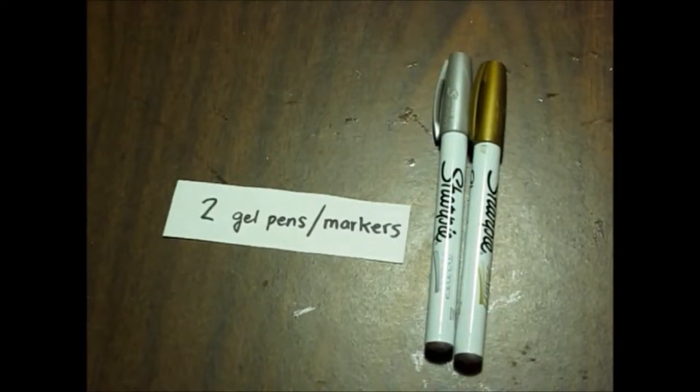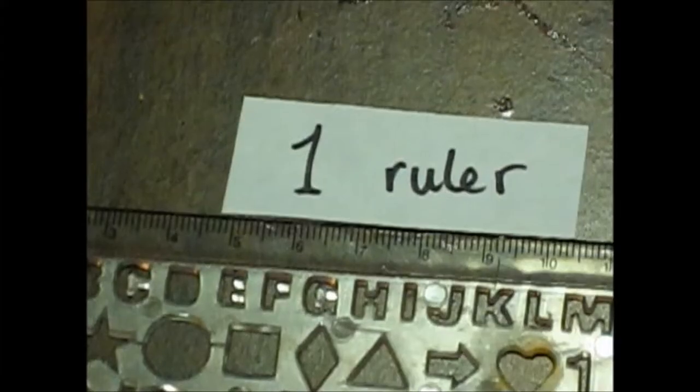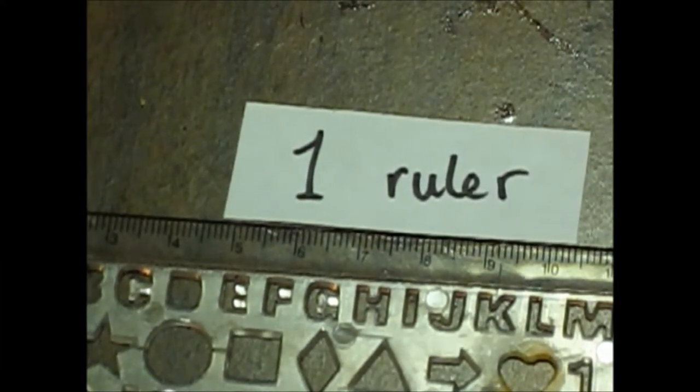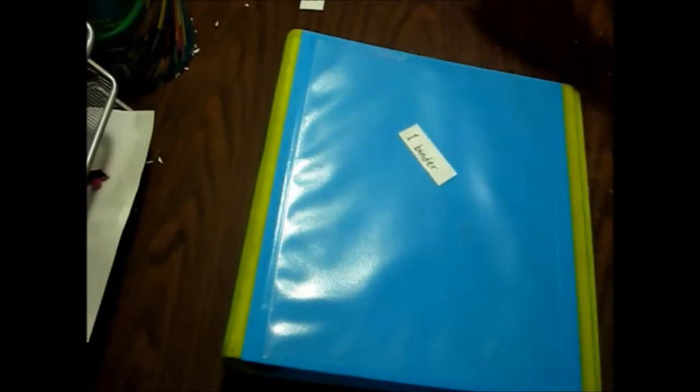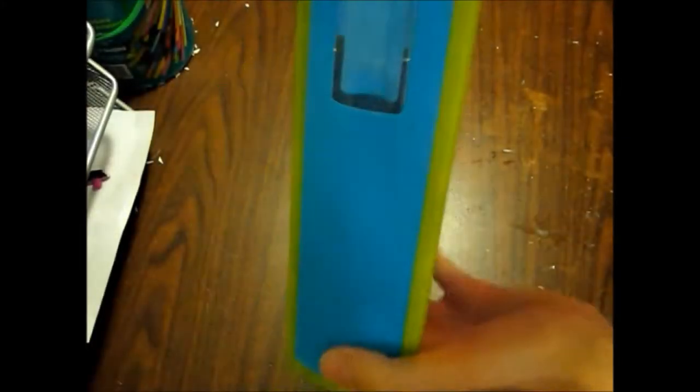I have these Sharpie paint pens that I got from Michael's, one ruler, and of course your binder with a clear plastic pocket at the front and a window at the side.